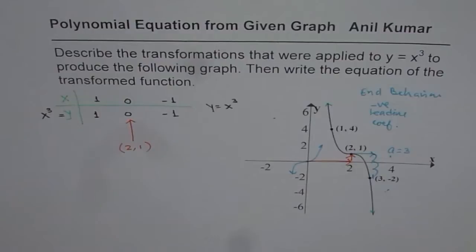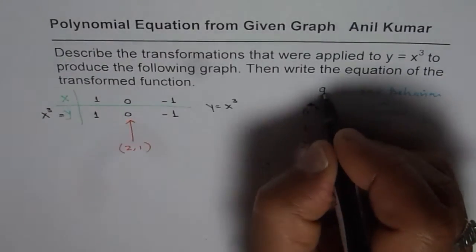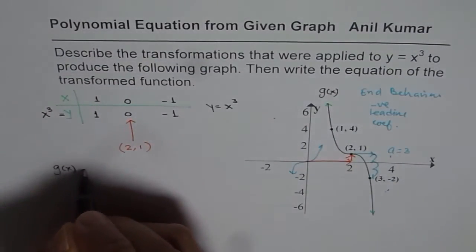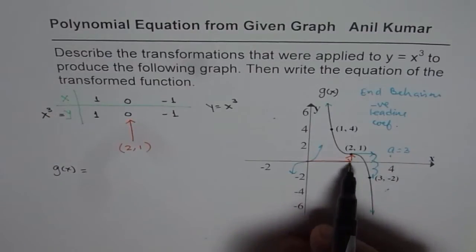Bringing all these things together, can you write down the equation of the transformed graph? So let's call this as g(x). For us, g(x) has been transformed. First is the translation.